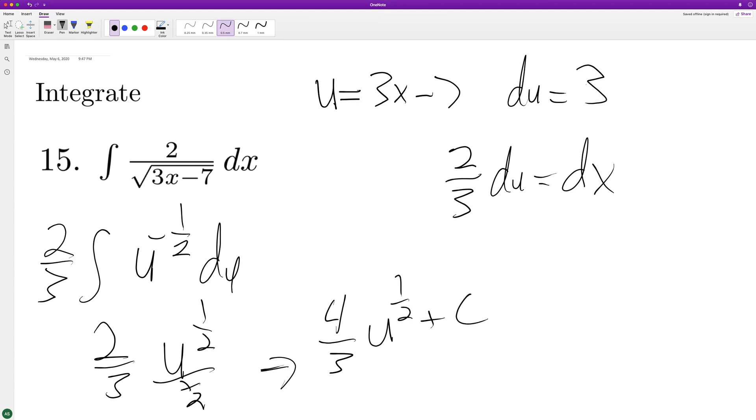Let's see. So this ends up being equal to 4 thirds, 3X minus 7 raised to the 1 half plus C.